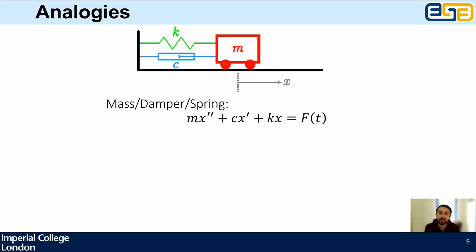This system has a second-order ordinary differential equation: mass times acceleration (x double-prime) plus damping times speed (x prime) plus spring stiffness times position equals the forcing term as a function of time. All terms have units of force — F = ma, so mass times acceleration is a force; damping times speed is a force; stiffness times position is a force. It's a second-order heterogeneous ODE describing the trolley.